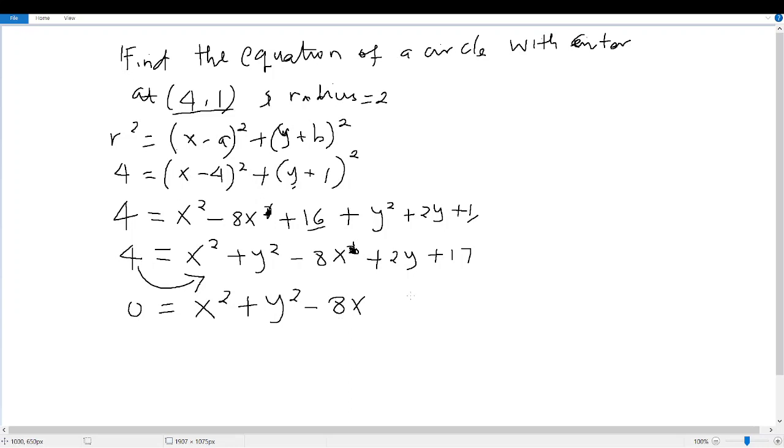Then plus 2y, then plus or minus... so when 4 crosses the equal sign to the other side, it is positive this side, so when it crosses the equal sign it becomes negative. So it becomes 17 minus, so 17 minus 4 becomes... and that is positive, so plus 13. So up to this point, this becomes our equation of the circle.